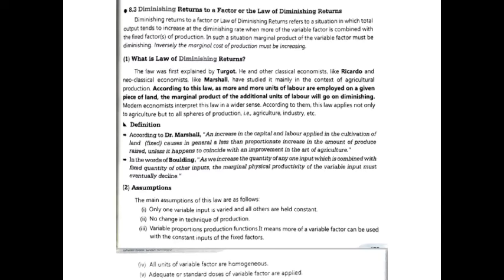Next are the assumptions of diminishing return to a factor. First, only one variable input is varied and all others are held constant — that means only one factor of production is variable, the rest are constant. There is no change in techniques.